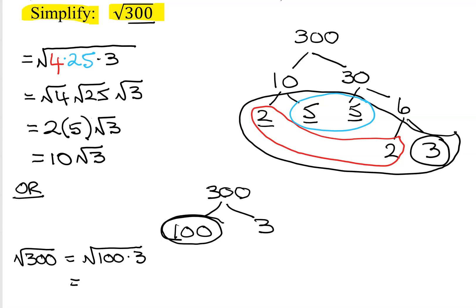And what's the square root of 100? 10. The square root of 3 is just the square root of 3. Do I get the same answer here as I do here? Yes. So I just wanted to point out that there are different ways of doing the problem. It doesn't have to break everything into prime factors if you notice perfect square factors along the way.